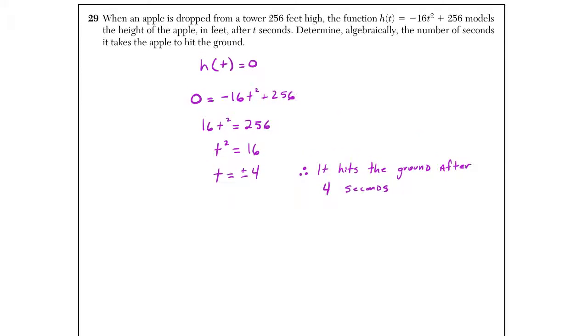When an apple is dropped from a tower 256 feet high, we get h of t. Determine algebraically, so unlike the question earlier, now we have to show some work. We can't just type everything in our calculator. How long does it take to hit the ground? First thing we want to take note of, an object hits the ground when its height is zero. So I set h of t equal to zero.